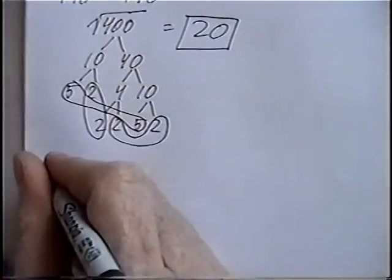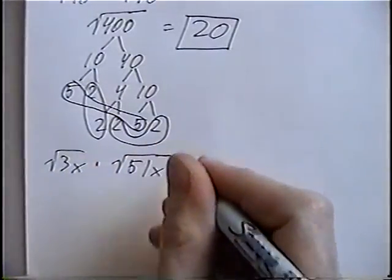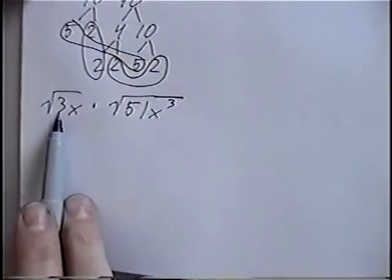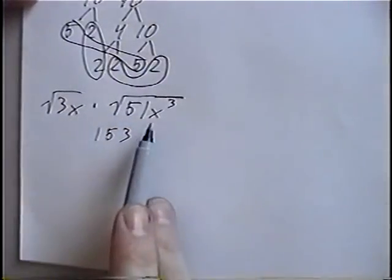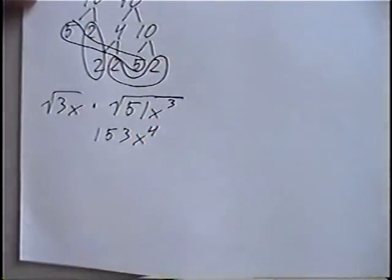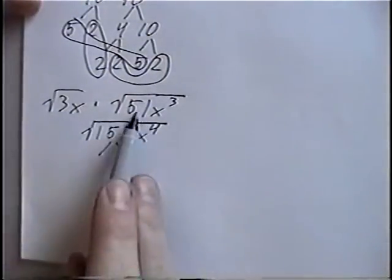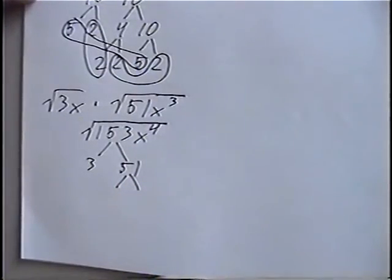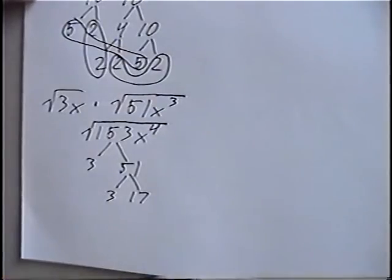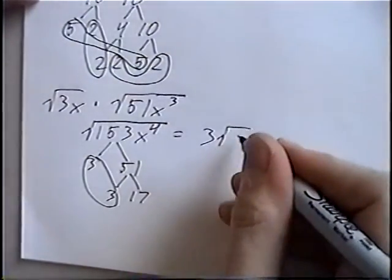The last problem for this section is radical 3x times radical 51x³. Same steps as before — with two radicals we multiply the numbers: 51 times 3 is 153, and x times x³ is x⁴. This stays underneath the radical. We'll factor 153 first: 153 is 3 times 51, and 51 is 3 times 17. 17 is a prime number we cannot factor. We have a pair of 3s, so we circle those — the first part of our answer is 3, and we have a 17 inside the radical sign.